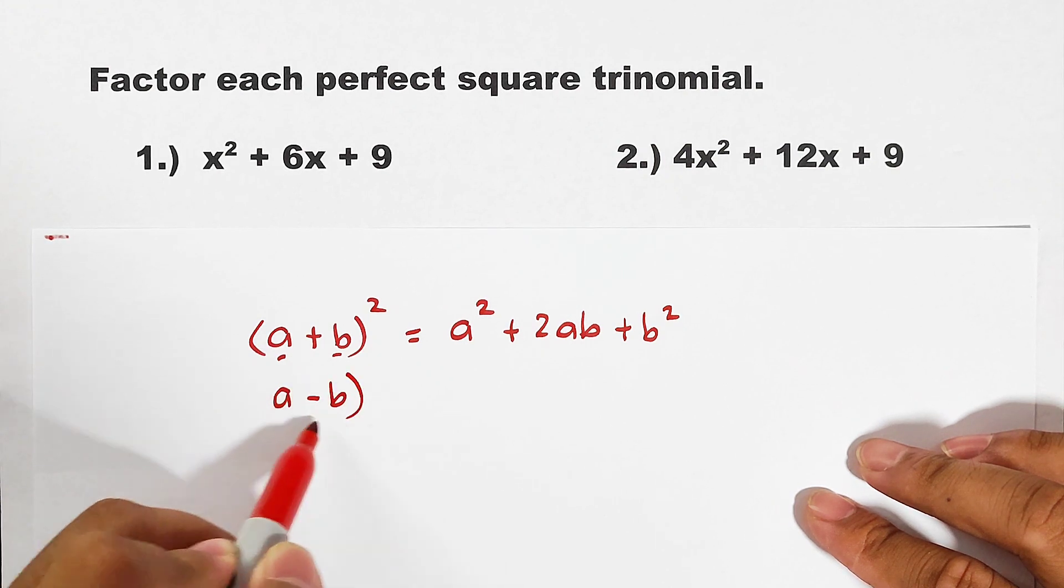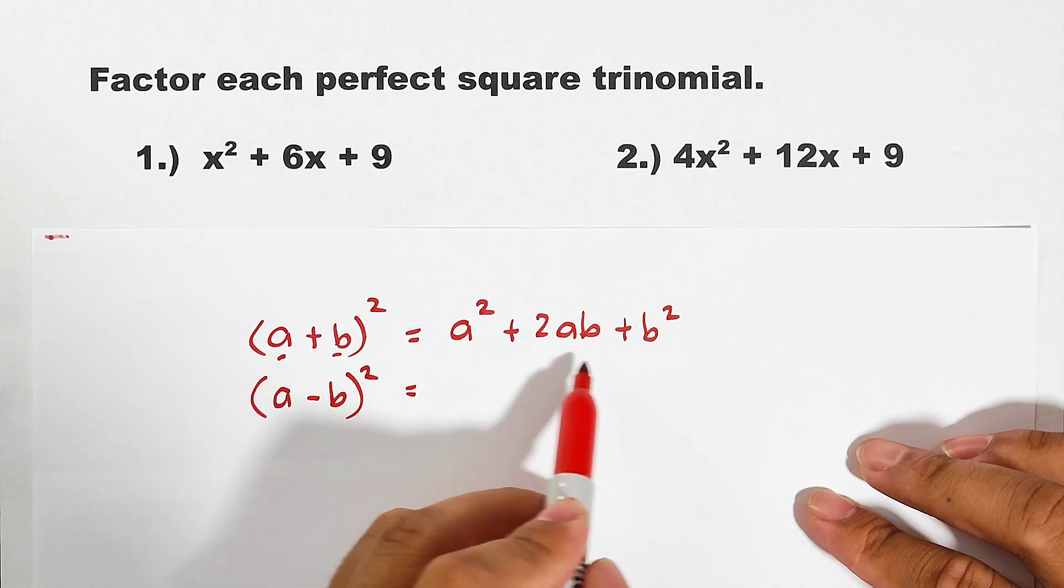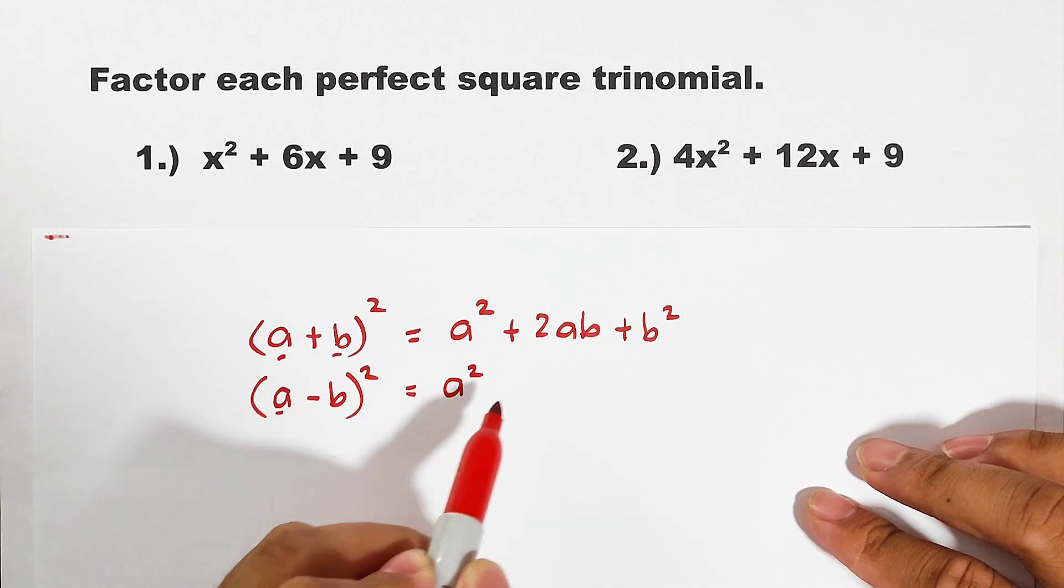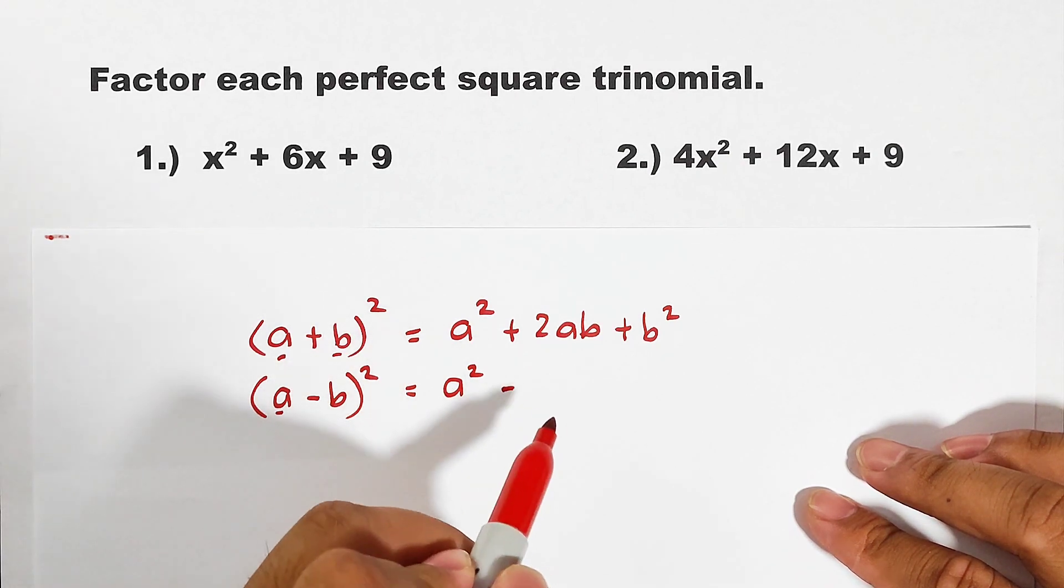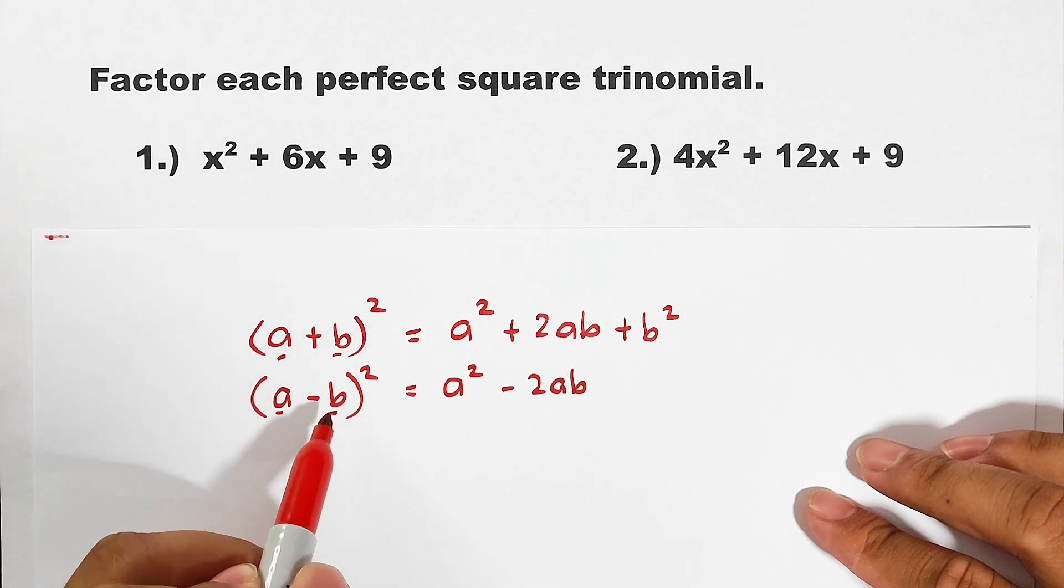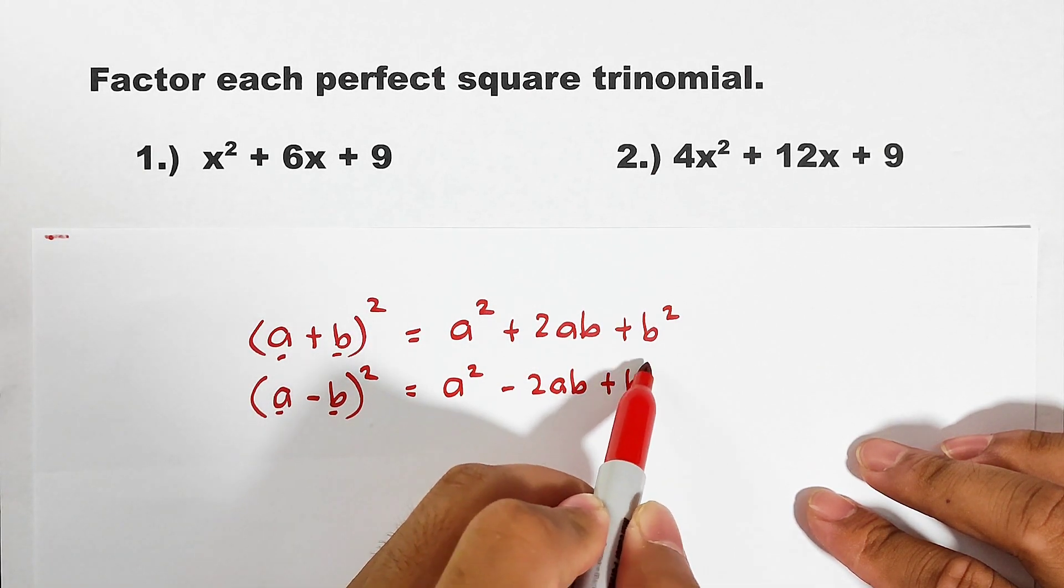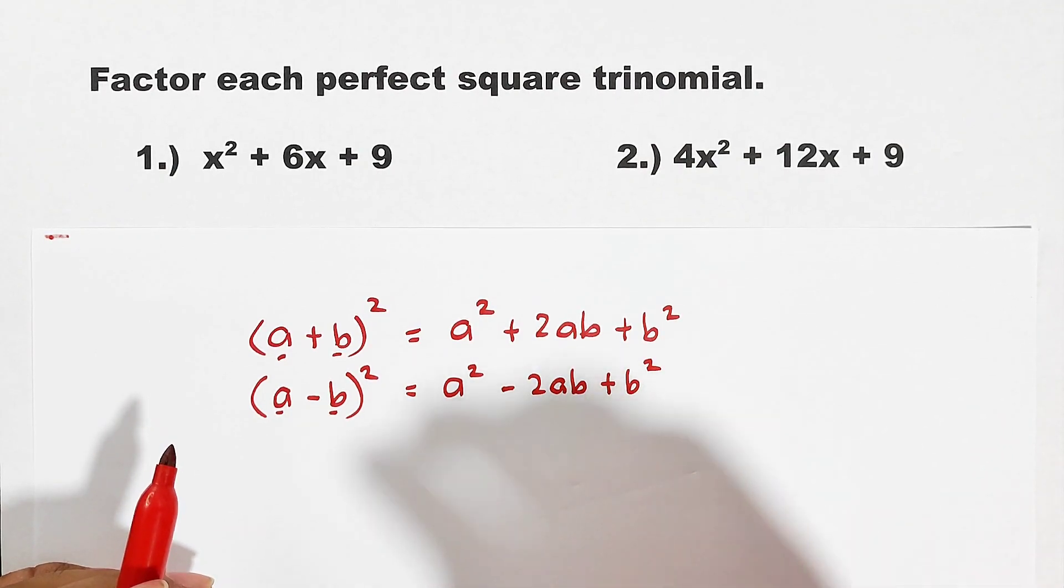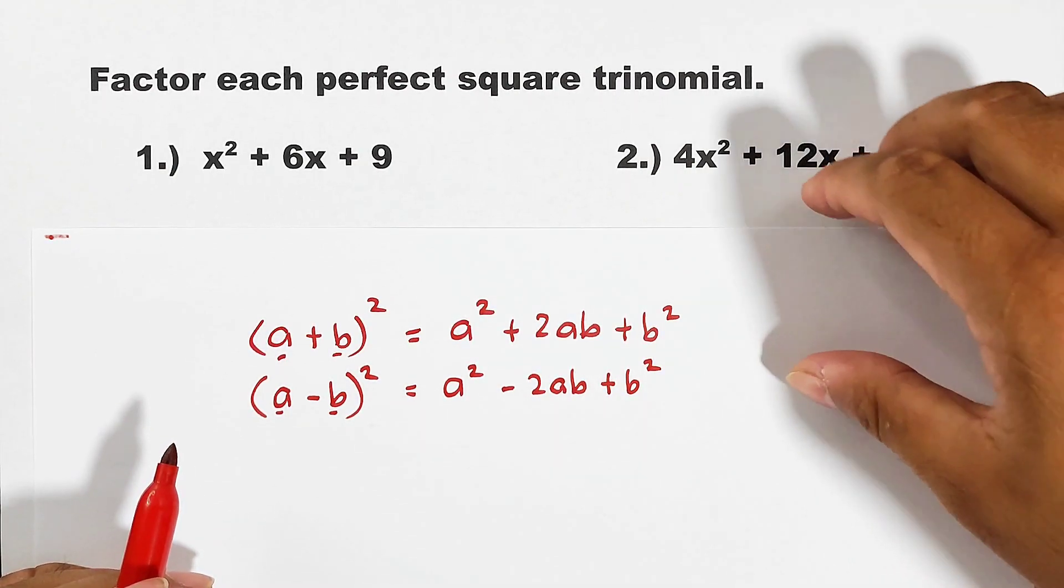Another pattern that we have: (a - b) raised to the second power. To get the perfect square trinomial in squaring this expression or polynomial, square the first term, that is a². Copy the sign. Then 2 times a times b, that is minus 2ab. Square the last term, that is plus b².